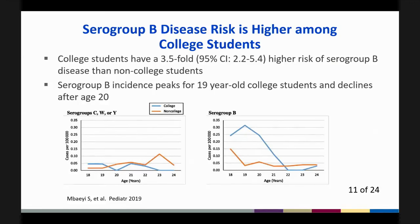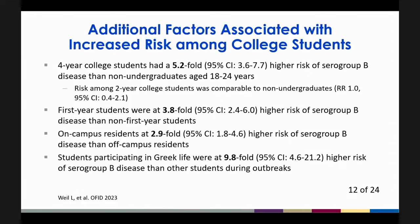Serogroup B disease is higher among college students. College students have a 3.5-fold greater risk of serogroup B disease than non-college students, and the incidence peaks at 19 years of age and declines after age 20. That higher risk is associated with students at a four-year college as opposed to a two-year college. Additional risk factors include being a first-year student, an on-campus resident, and participation in Greek life.